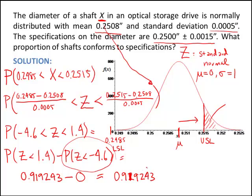As a recap: we had a normal curve with a mean and a standard deviation, and we were trying to find the proportion of x values between the upper and lower specification limits. To do this, we used a cumulative standard normal table. To use it, we had to convert our values to standard normal values. The standard normal random variable is usually denoted by z, which is why we switched to z.